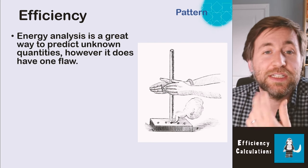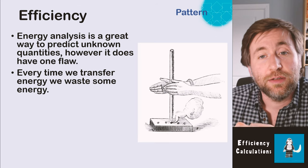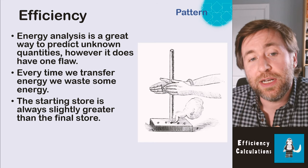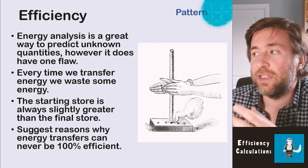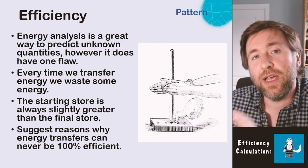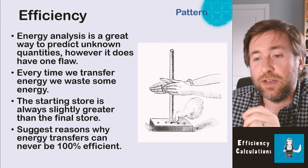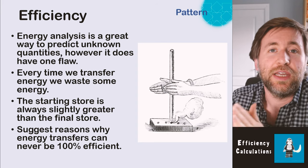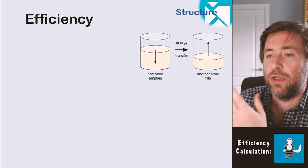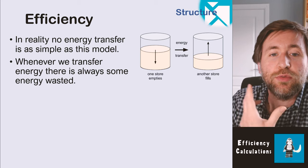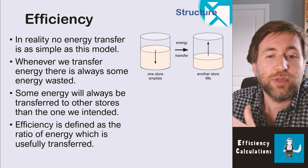Energy analysis lets us calculate one store and use that value to calculate something about another store. However, every time we transfer energy we waste some of it, so the starting store is always slightly greater than the useful final store. Energy transfers can never be 100% efficient because whenever we do any transfer we always end up transferring some energy by heating to the surroundings. There's always some wasted store — the store we didn't intend to fill.